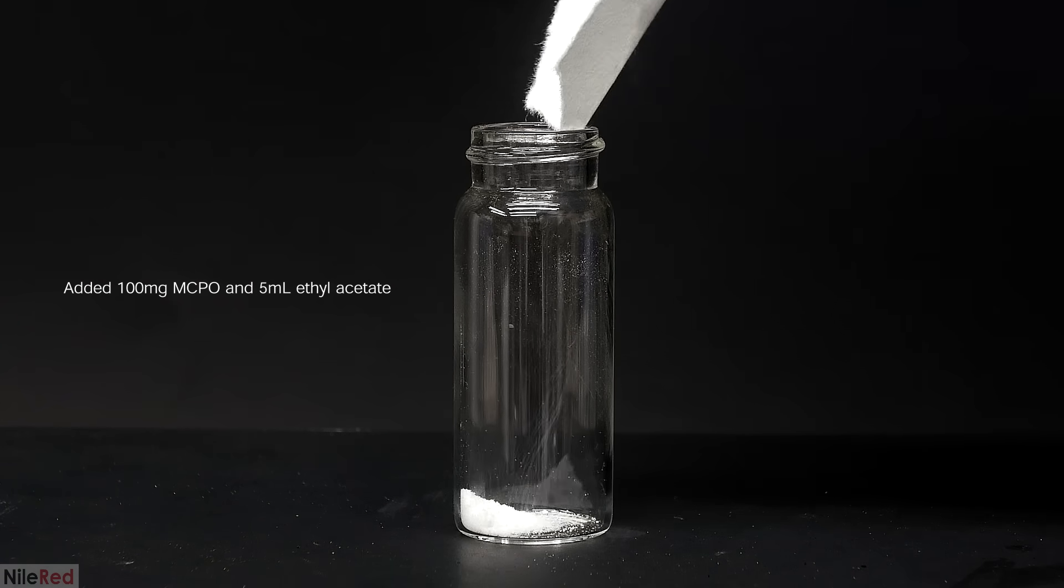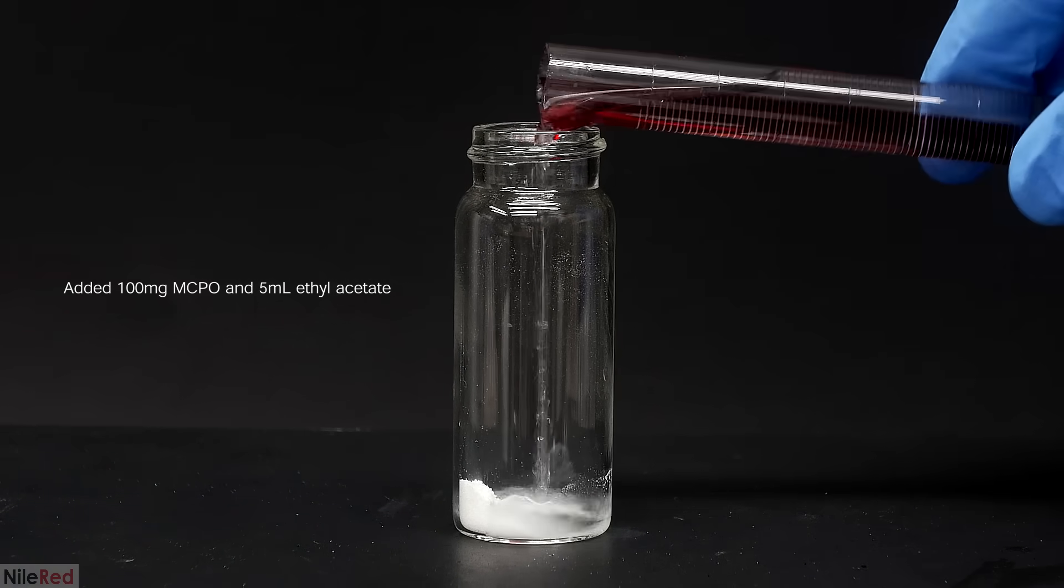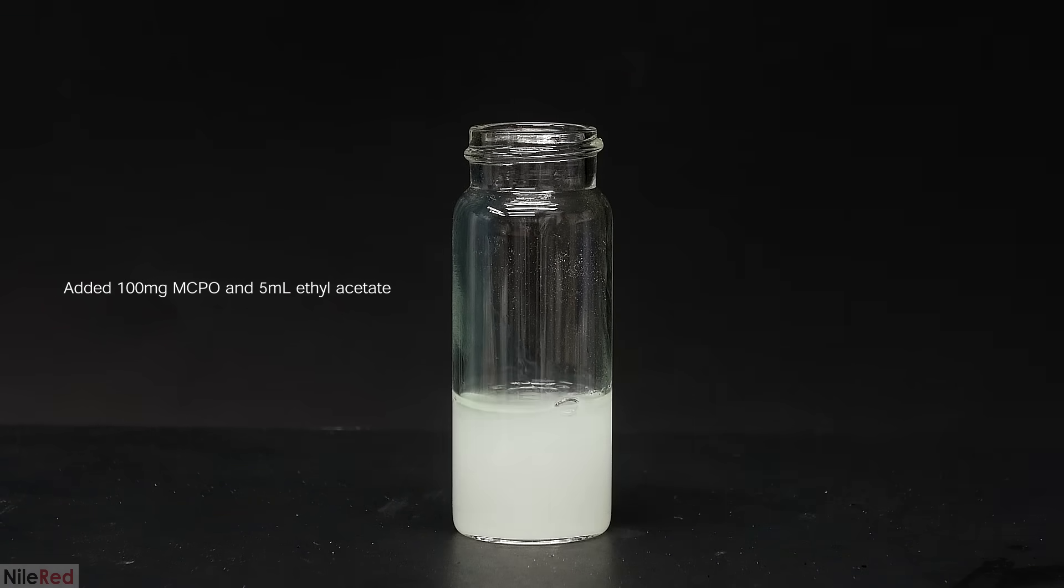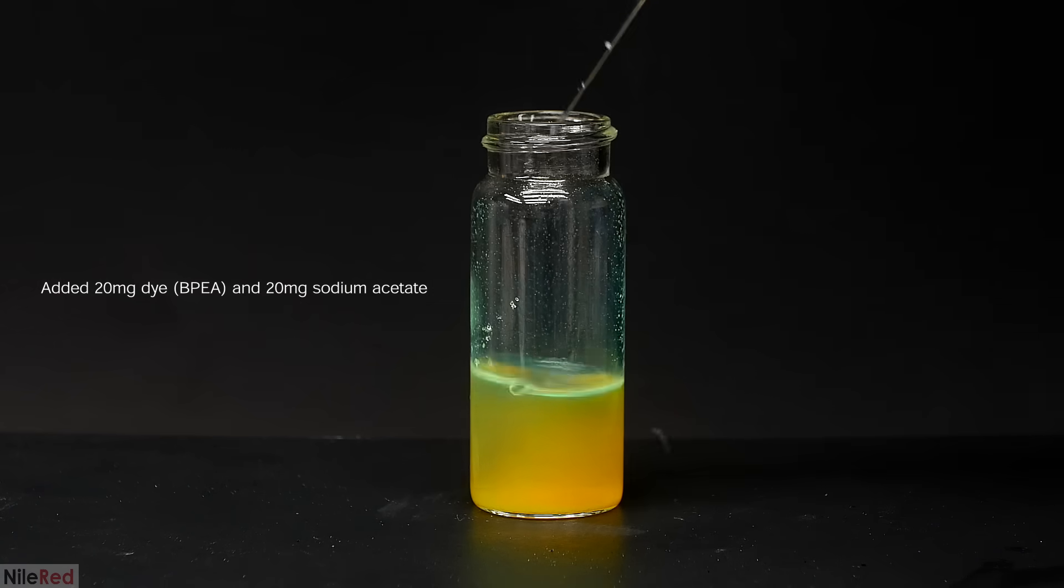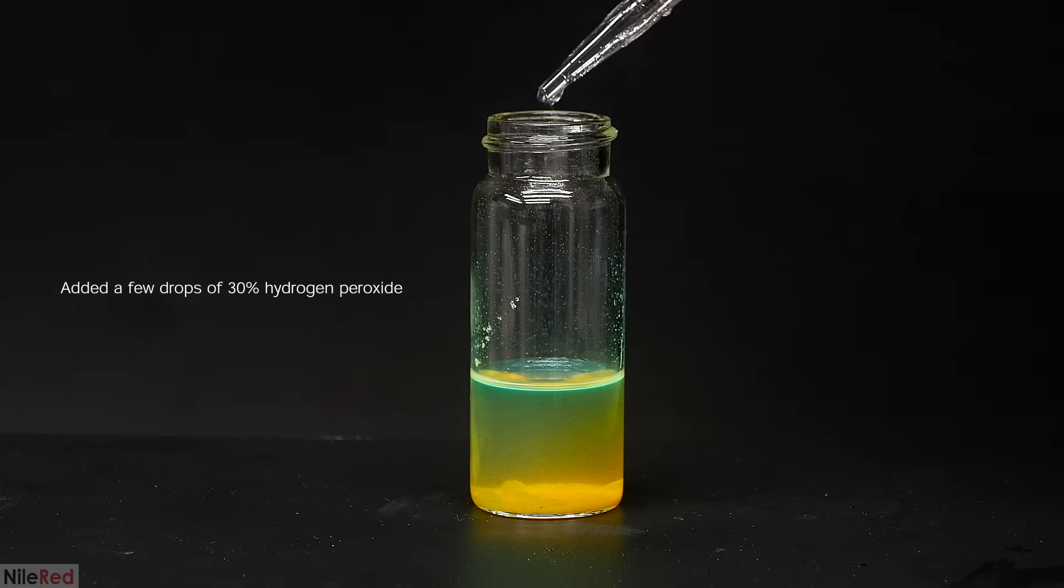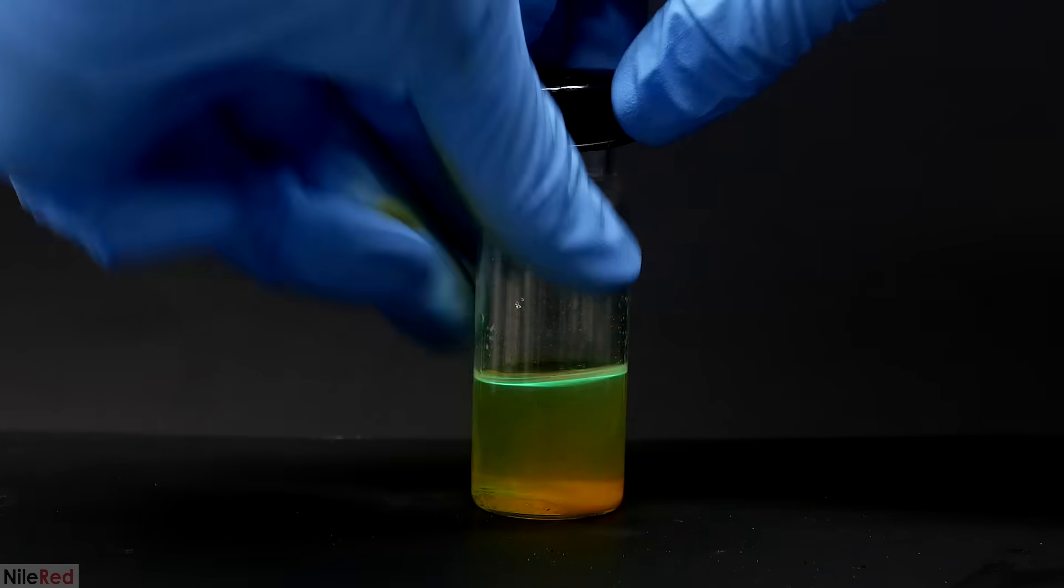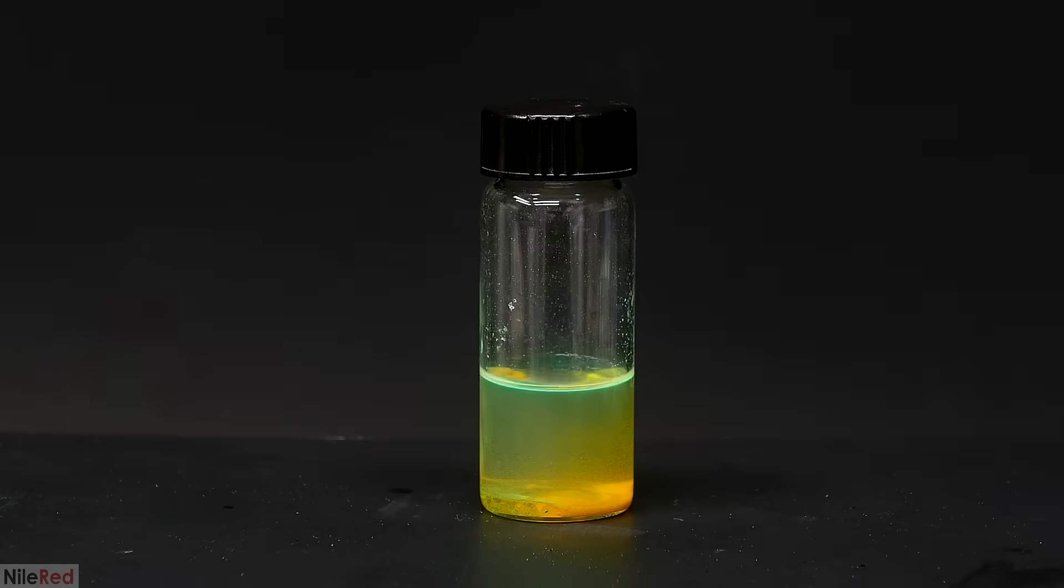Now to test it out, and to see if it actually works. So into this vial I add 100 milligrams of MCPO, followed by 5 milliliters of ethyl acetate. I mix it around a bit, and then I dump in a fluorescent dye and some sodium acetate. The last thing to add is the hydrogen peroxide, which initiates the reaction. The ethyl acetate and the peroxide don't mix together very well, so to get the reaction started it needs to be shaken.